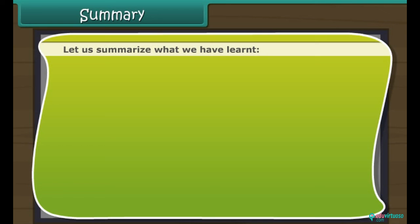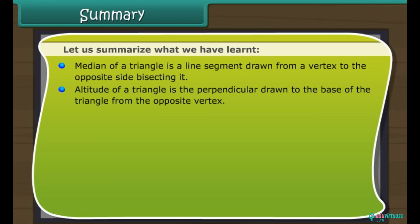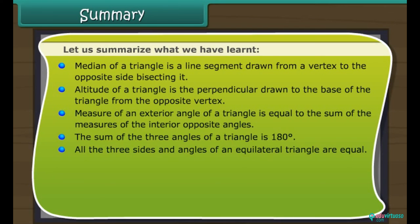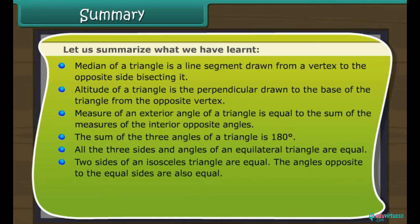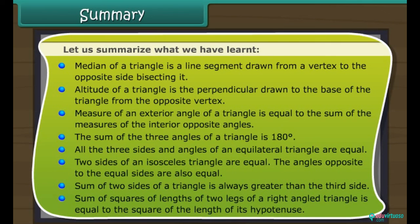Let us summarize what we have learned. Median of a triangle is a line segment drawn from a vertex to the opposite side, bisecting it. Altitude is the perpendicular drawn to the base from the opposite vertex. The measure of an exterior angle equals the sum of the interior opposite angles. The sum of the three angles of a triangle is 180 degrees. All three sides and angles of an equilateral triangle are equal. Two sides of an isosceles triangle are equal, and the angles opposite those sides are also equal. The sum of two sides is always greater than the third side. The sum of the squares of the two legs of a right-angled triangle equals the square of the hypotenuse.